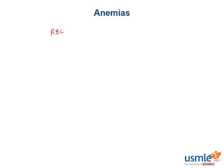So first, let's start by defining anemia. Anemia is defined as loss of red blood cell mass, and you can measure anemia either through hemoglobin or hematocrit. A hemoglobin of less than about 12 grams per deciliter or a hematocrit of less than about 35% is clinically defined as anemia, and that's really all you need to diagnose anemia. You can actually have a completely healthy asymptomatic patient with a hemoglobin of 10, and they're still considered anemic.